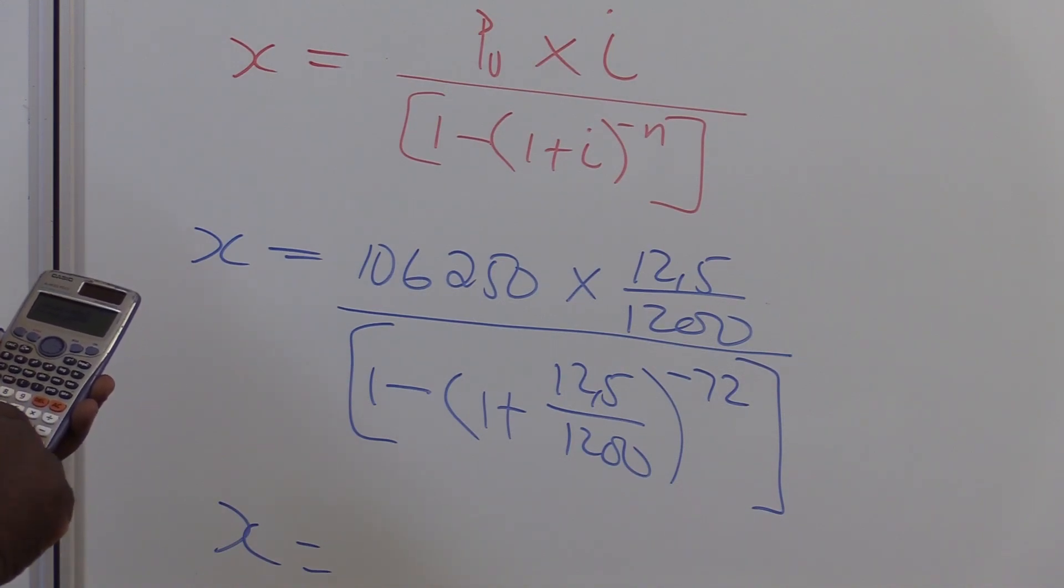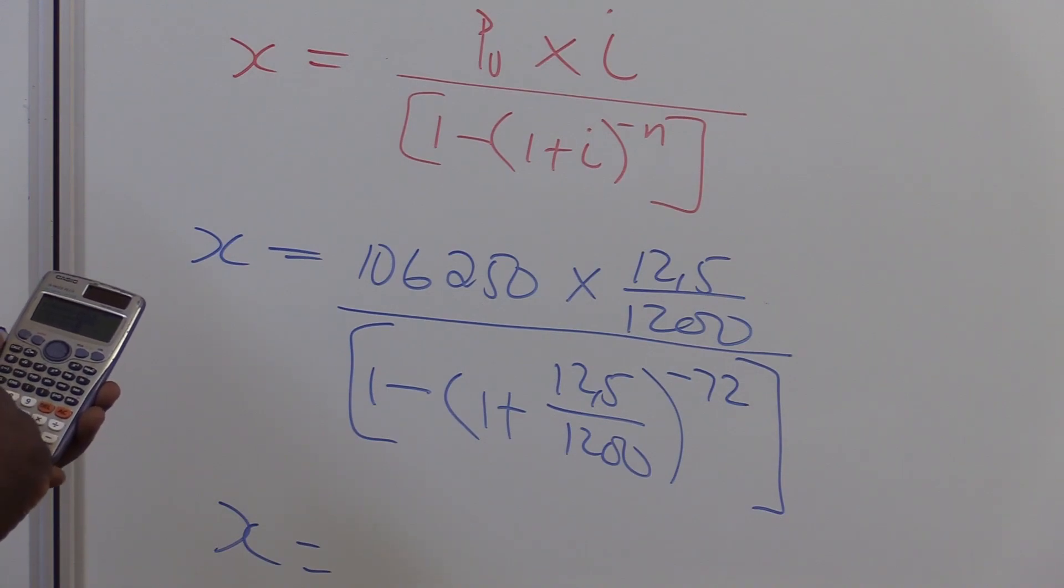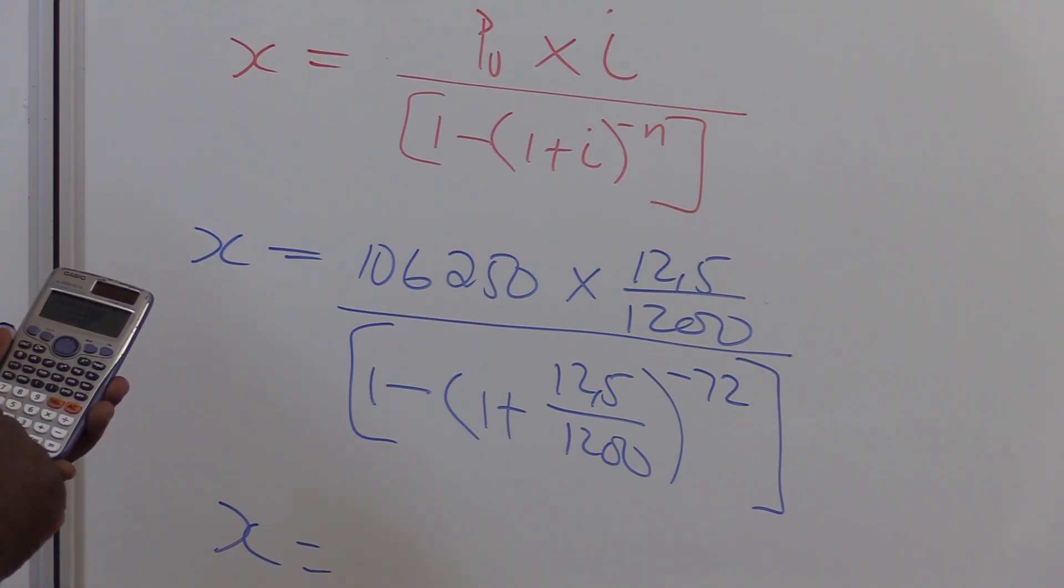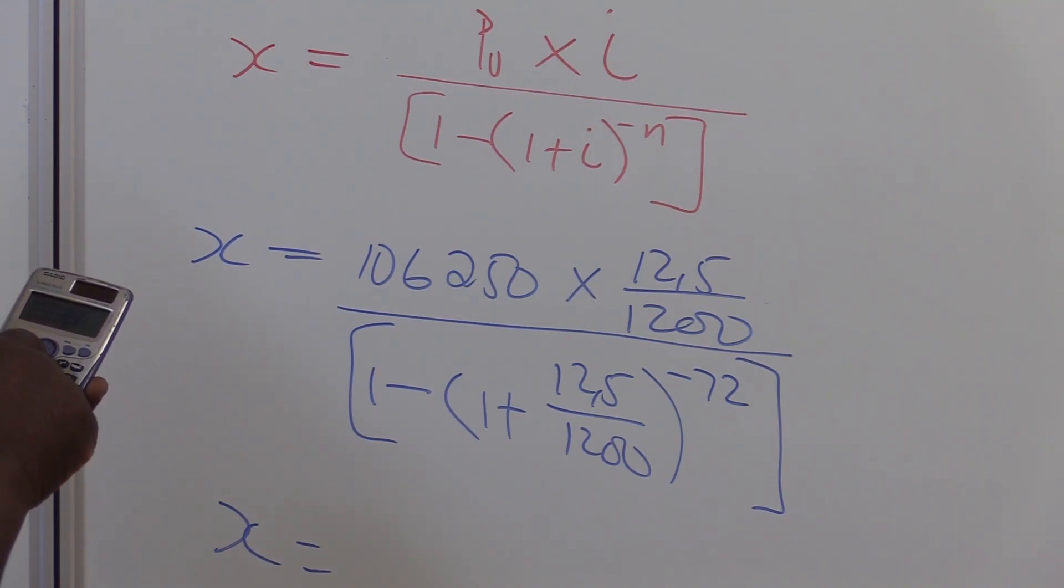Then, you've got 1 minus. And another bracket as you see it. 1 plus. Then, the fraction button, which is 12.5. Then, you go to the denominator there, which is 1,200. Then, you close that bracket. Then, you go to the power.